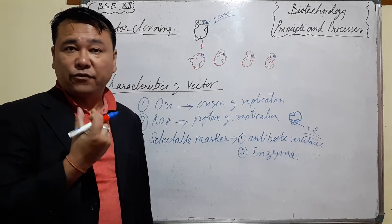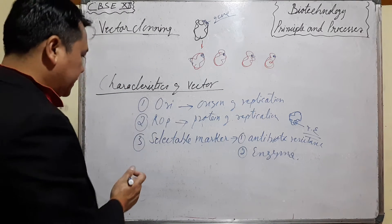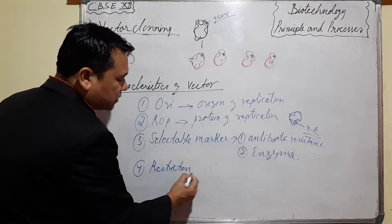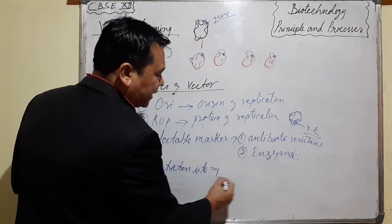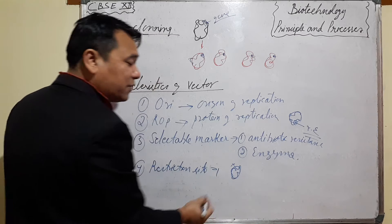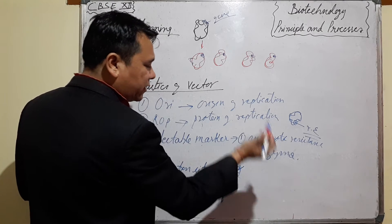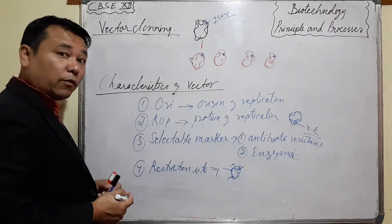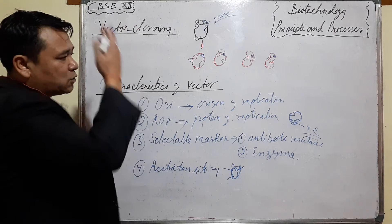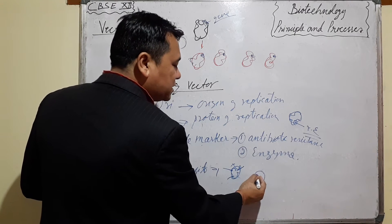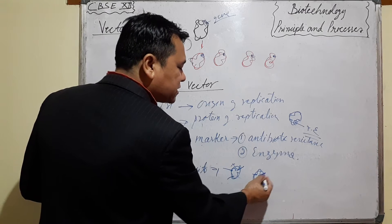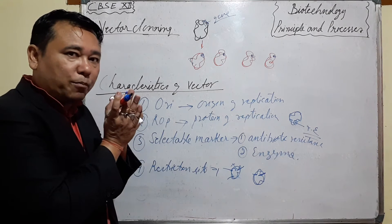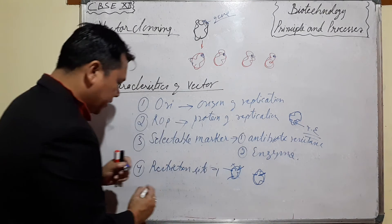Number four: it must have one restriction site. If the vector contains many restriction sites, the restriction enzyme will cut at multiple places and destroy the vector. So a plasmid vector must have only one restriction site — that restriction site is where the DNA is cut and opened, so the foreign gene can be inserted.